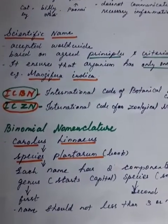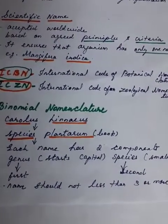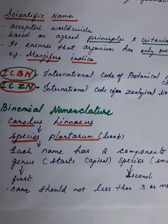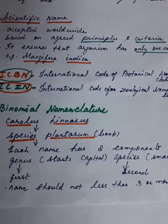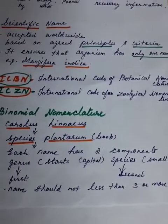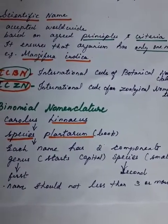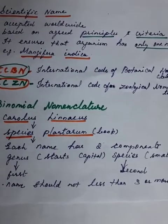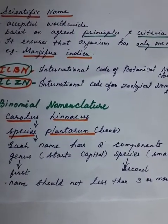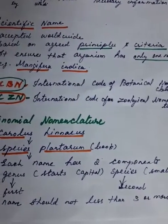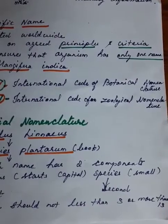The third method is binomial nomenclature. Bi means two — so two names are given to an organism. Who proposed it? Carolus Linnaeus. He described binomial nomenclature and wrote the famous book Species Plantarum. He gave each organism two components: the first is genus, and the second is species, which starts with a small letter. The genus name should not be less than three letters or exceed more than 13 letters.